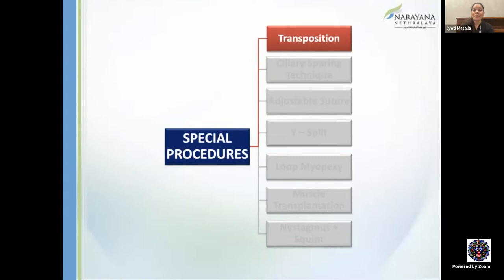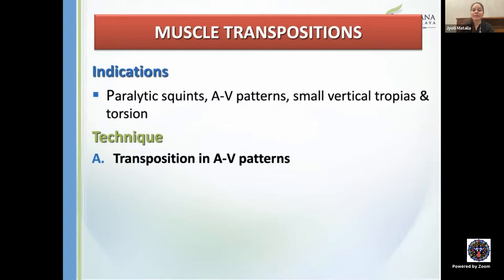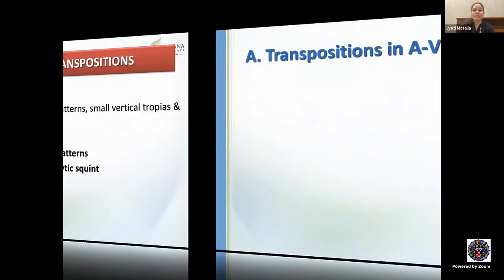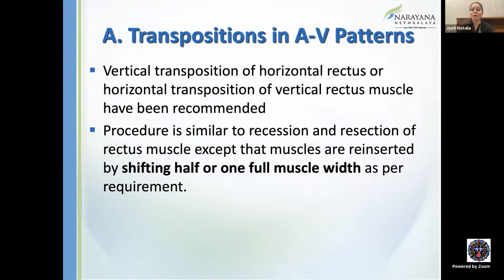Muscle transpositions are indicated in paralytic squints, in A-V patterns for small vertical tropias and torsions. This will be divided into two parts: transposition in AV patterns and transposition in paralytic squints. In AV patterns, vertical transposition of horizontal recti or horizontal transposition of vertical recti can be performed. The procedure is similar to recession/resection except muscles are reinserted by shifting half or one full muscle width, and the muscle should be reinserted parallel to the limbus.